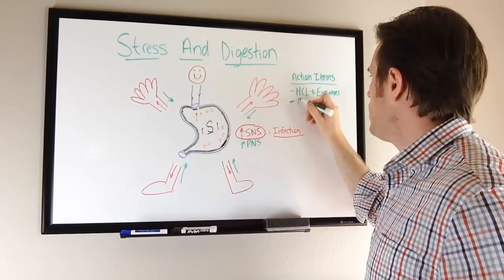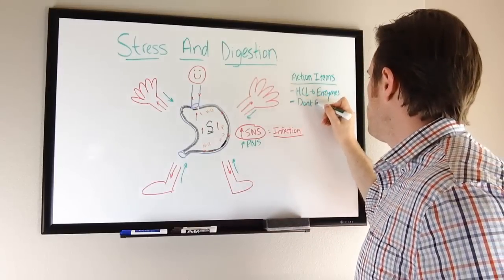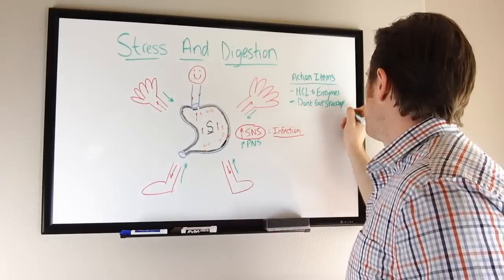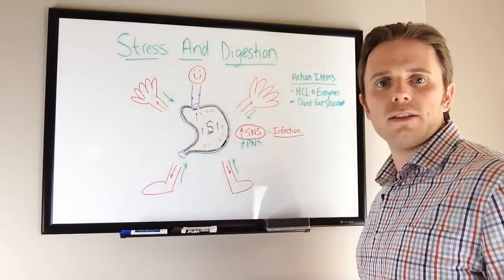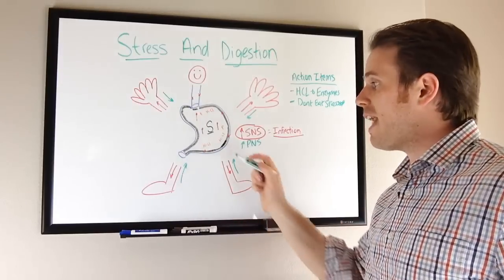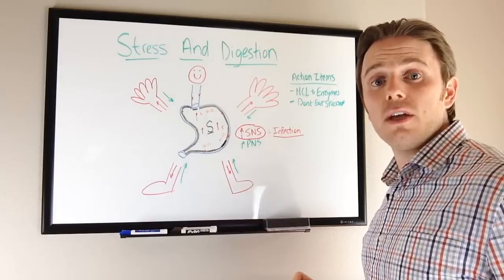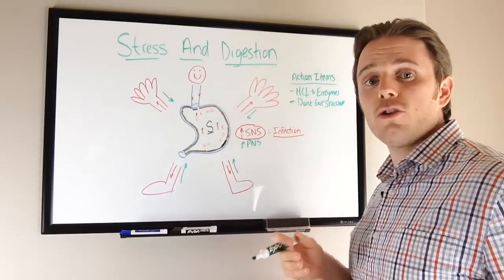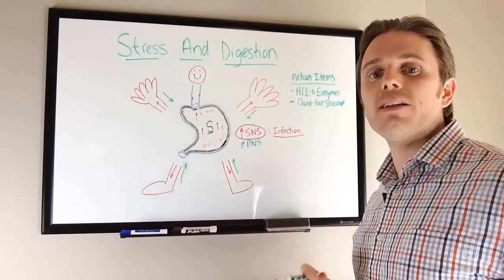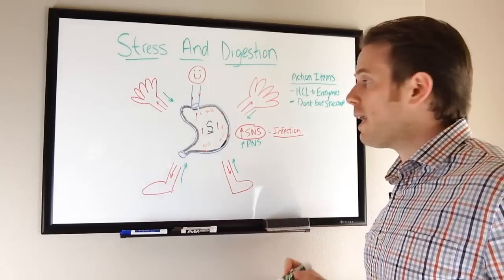Next, don't eat when you're stressed. Give yourself time to rest and relax, to hydrate before you eat. Remember, when you're hydrated, it can actually dilute some of these enzymes and acids and bile salts. We want to make sure we're doing our best to drink at least 10 minutes away from meals or two hours after. That can be really helpful.